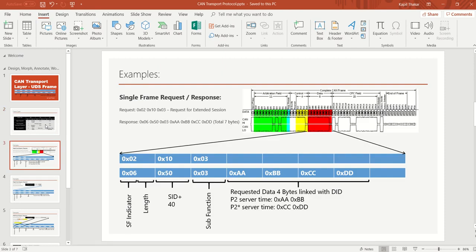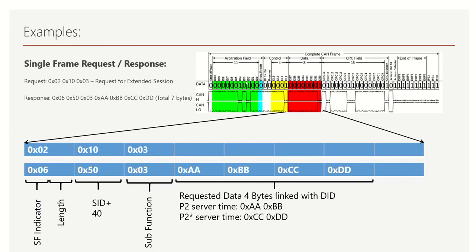As we saw in the last lecture, we have a complete CAN frame with different sections: the arbitration field, control field, and data field. In the data field, UDS comes into the picture — we send the UDS payload into the data part. Let's consider the first single frame request and response, taking an example of a request for an extended session.